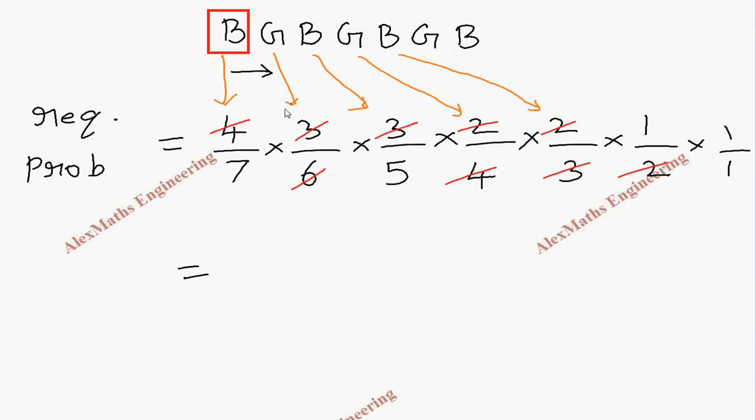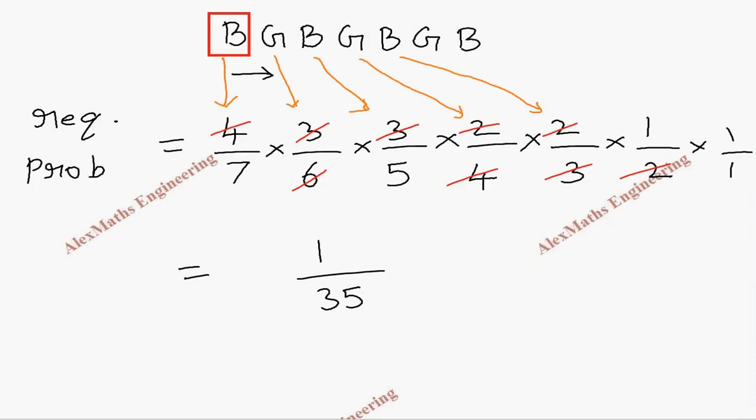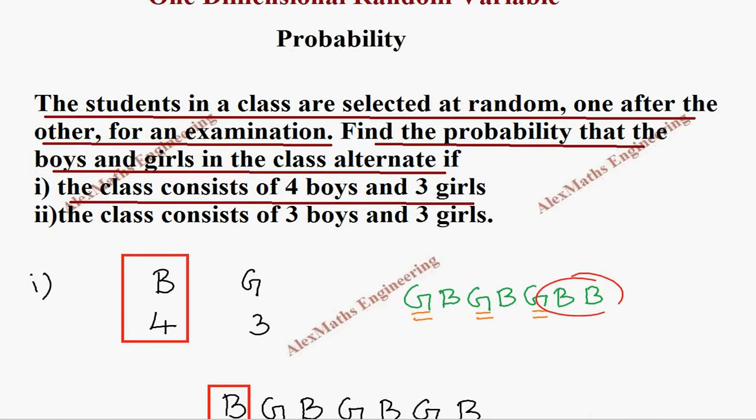So totally the remaining is the numerator only one, and denominator it is seven and two, five, which is 35. Now coming to the second subdivision, they have given the class consists of three boys and three girls.